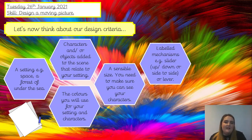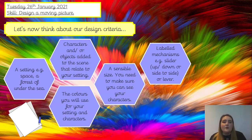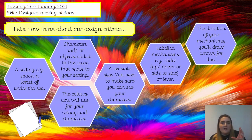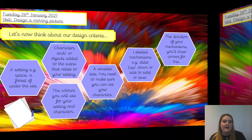When you're designing, once you've thought about your setting and your characters, you need to label your mechanisms. You need to say whether your character — say you had an astronaut — is it going to be a slider that goes up and down, or side to side, or is it going to be on a lever? You must label your mechanism so that when you come to create it next week, you know exactly what you need to make. You then need to draw the direction of your mechanism using arrows, so that it's really clear when you come to make it next week.